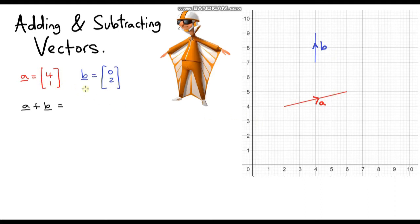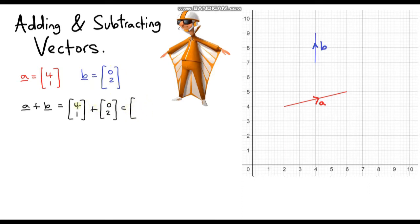When we're adding two column vectors together, we simply add the corresponding components. So if we take column vector A and add on column vector B, the resulting vector will just be the sum of the corresponding components. Adding the horizontal components: 4 plus 0 gives us 4, and 1 plus 2 gives us 3. So this is our answer.